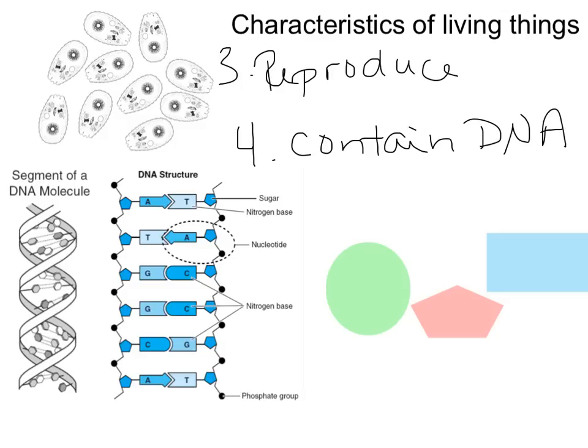Your DNA is a double-stranded helix shape. DNA is made up of what are called nucleotides — it's very important that you remember what a nucleotide is. A nucleotide is a little piece of DNA. We put a whole bunch of these nucleotides together, and that's going to make our big long strand of DNA.